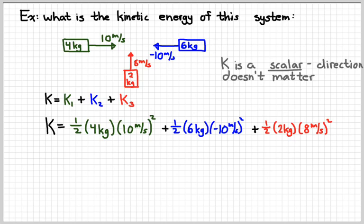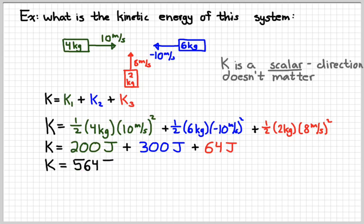It doesn't really matter if I make that ten negative or not because when I square it, it's going to end up being positive. And so this would reduce to 200 joules plus 300 joules plus 64 joules. Add it up, it would be 564 joules.